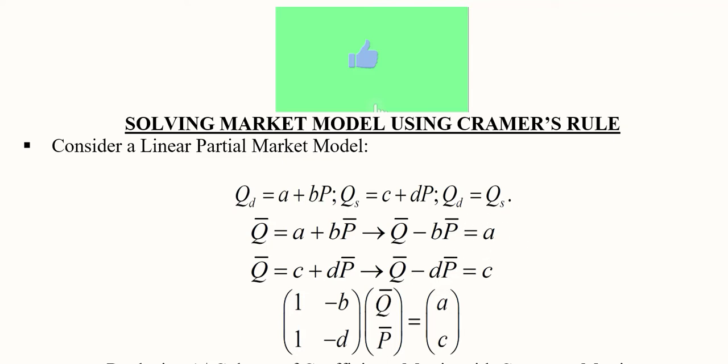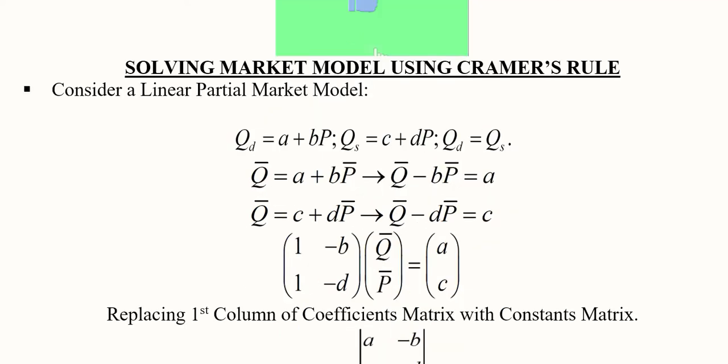The supply function is also rearranged: Q minus dP equals C, with the constant left on the right-hand side. Since we are now converting these into equilibrium values, we place a bar over the variables involved.